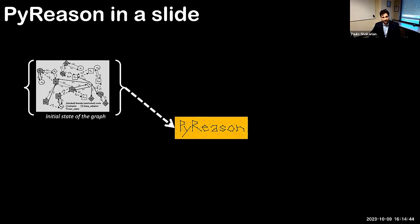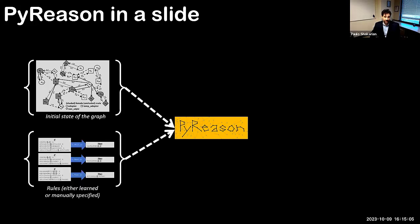That graph evolves over time. There's the initial state of the graph at any time period. The good news is since it's open world, if something is not known it's not treated as false, it's actually treated as unknown, and things can either become true or false as the inference process proceeds.